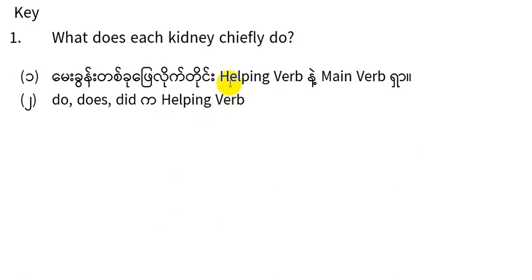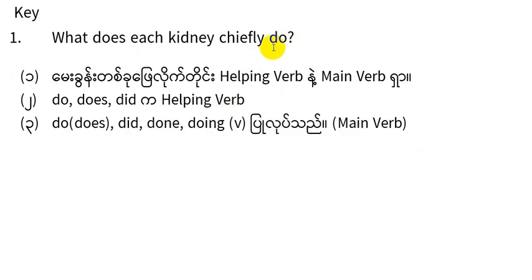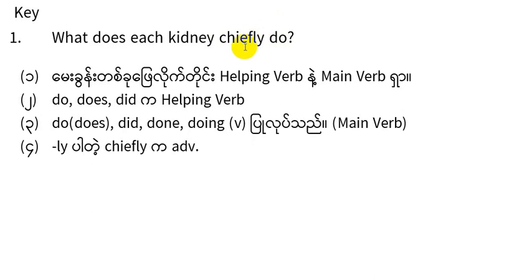Do, does, did, then doing. The verb name is main verb. Have a verb is 'does.' Main verb is 'do.' This verb is 'chiefly' — the chiefly of the verb is the adverb. The ex-adverb looks like the verb.